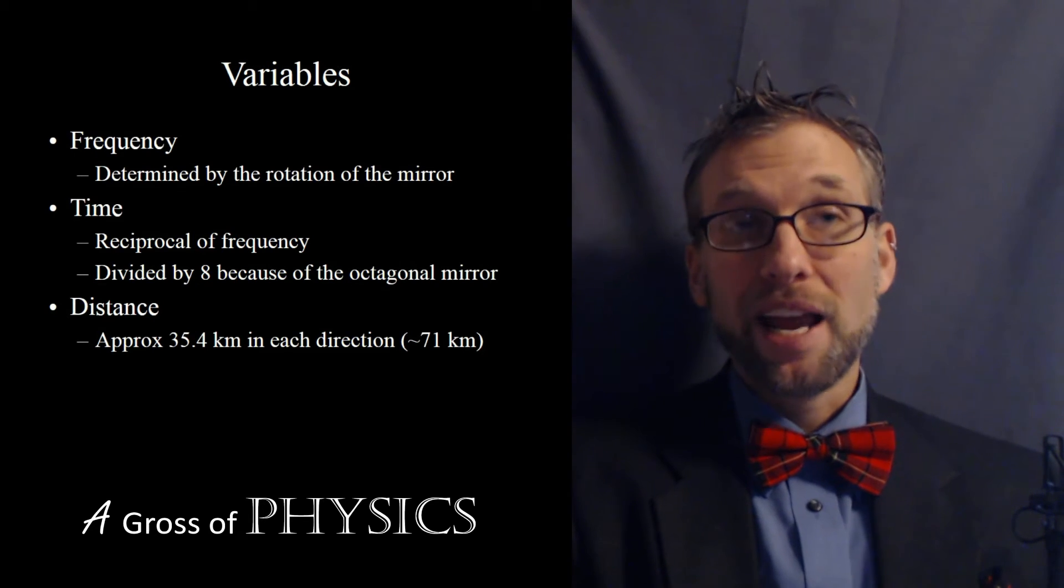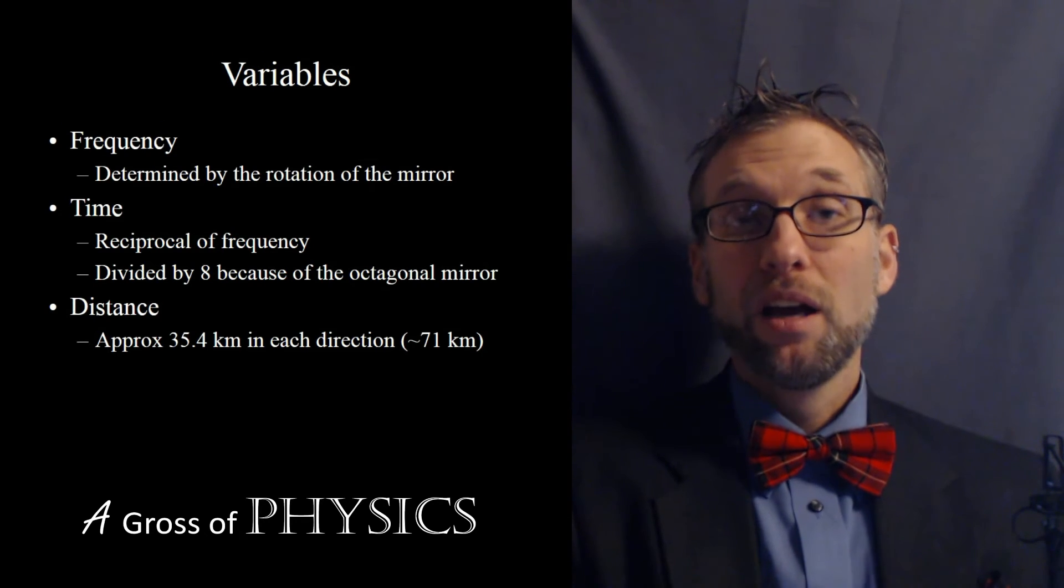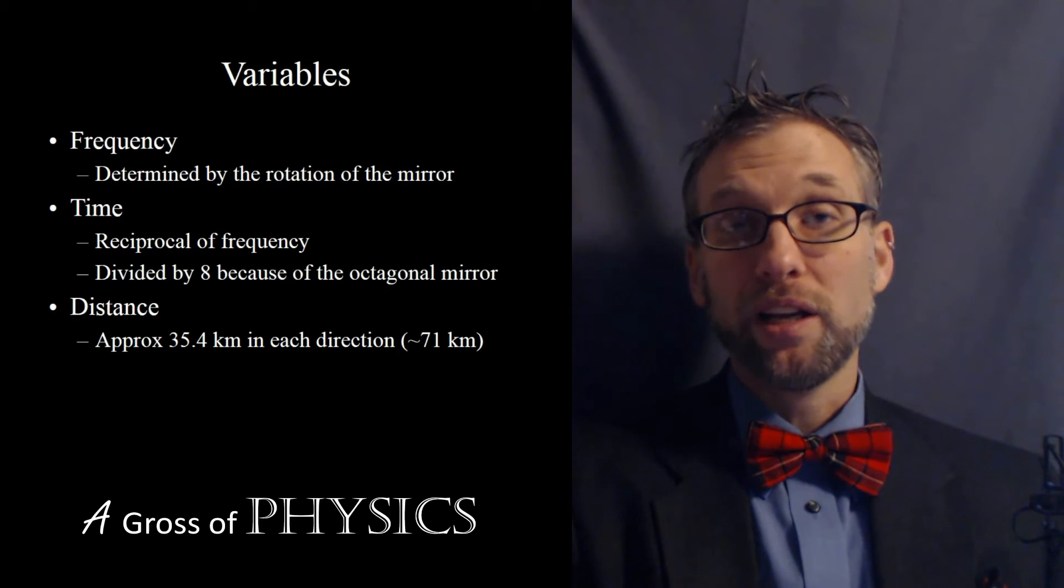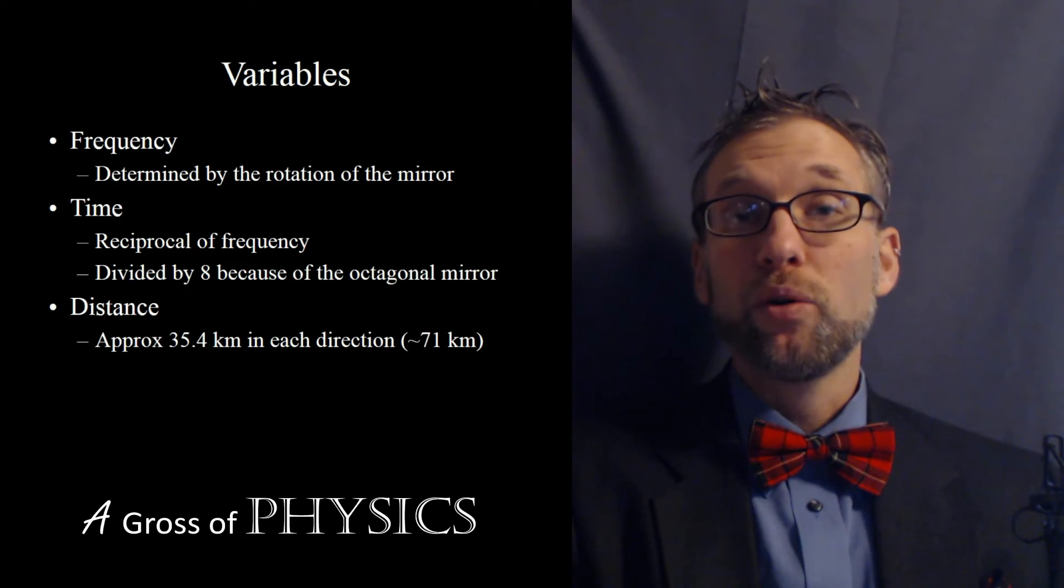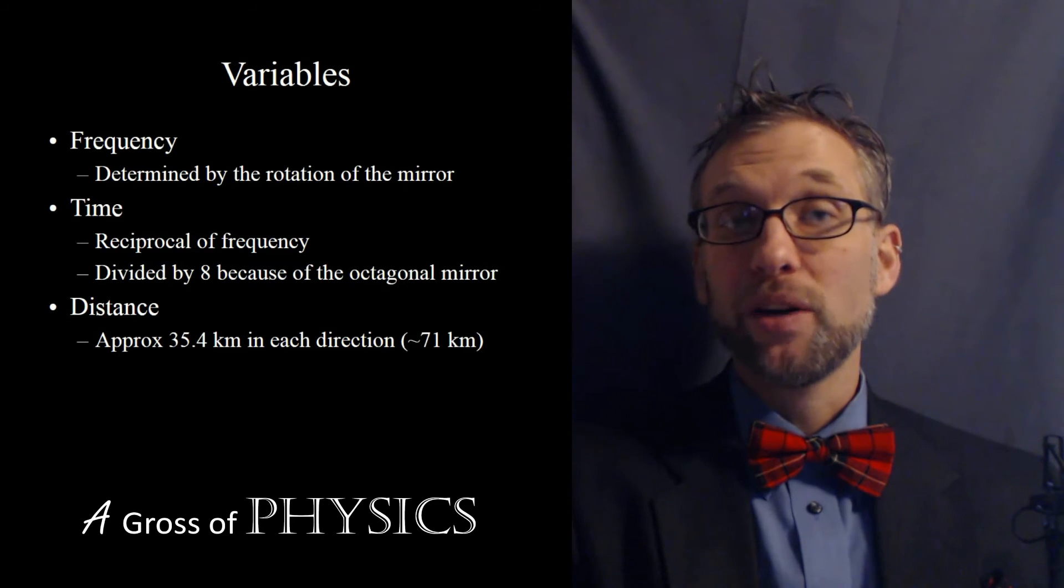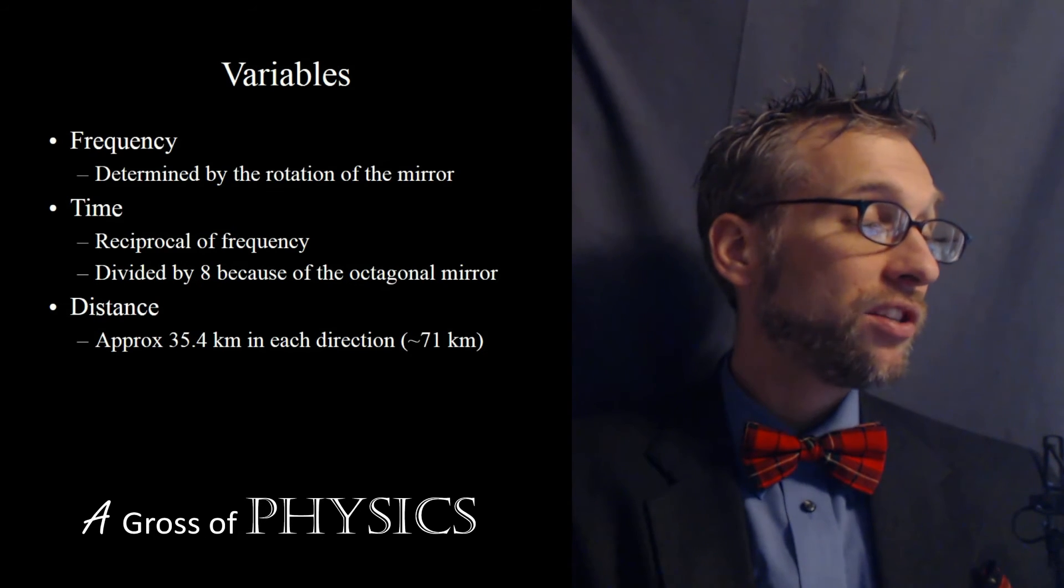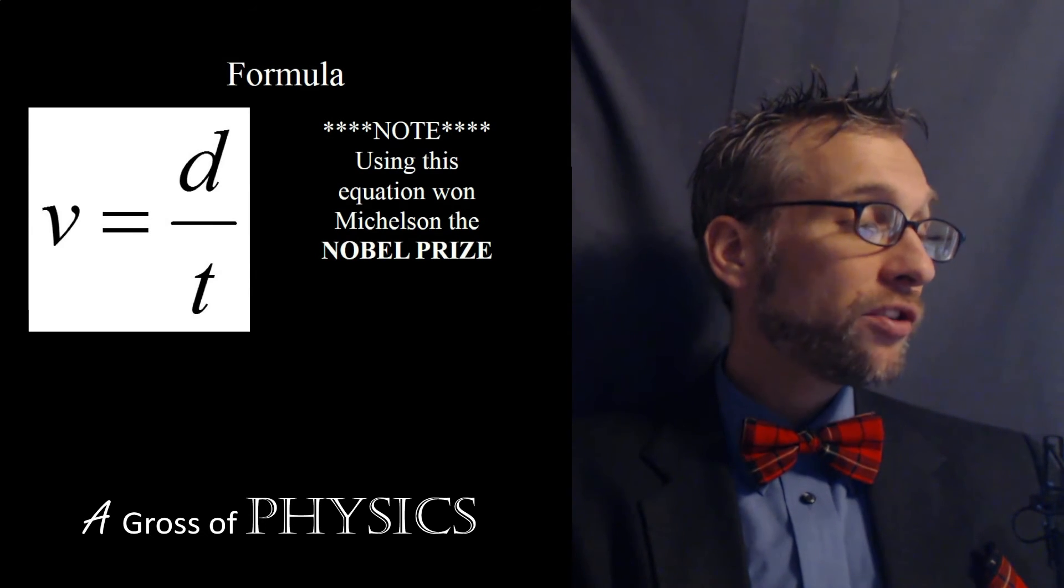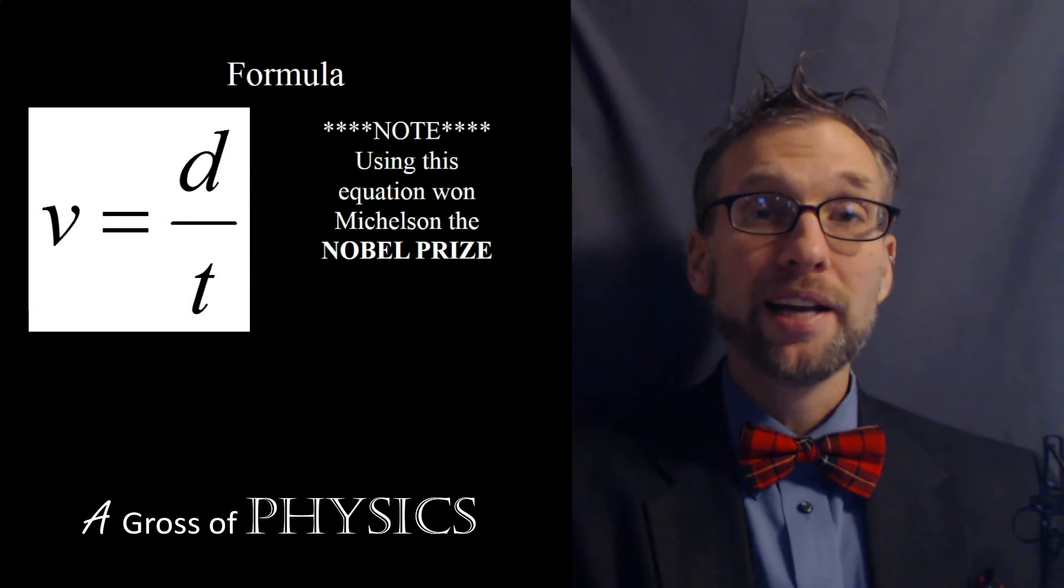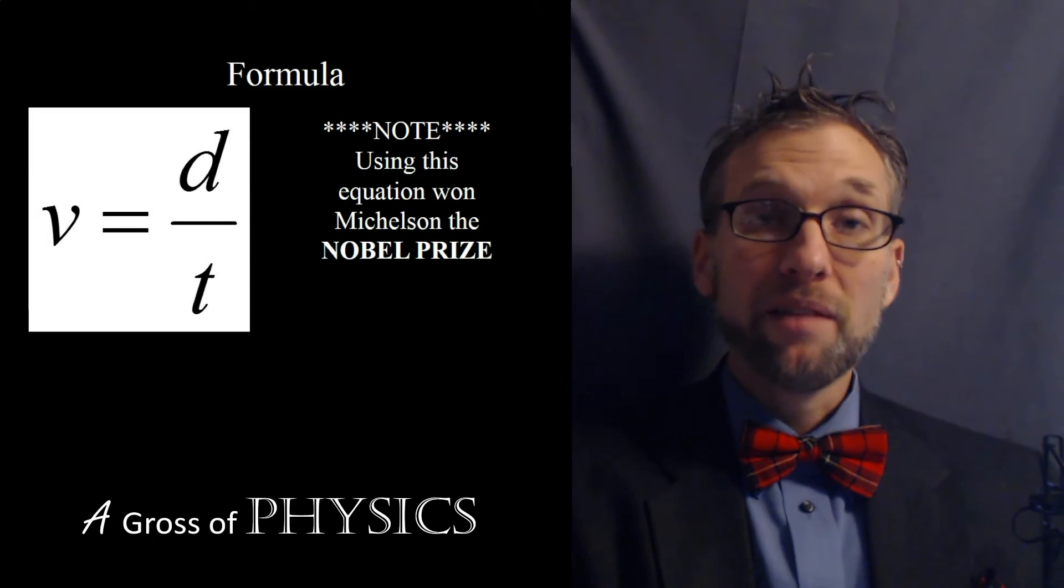So ultimately he painstakingly figured out what frequency the mirror would have to rotate in order to get the light source to be exact. And it would have to have a steady stream of light going into his eye. If he shone the light and the mirror was spinning too quickly, it would miss his eye. If too slowly, it would also miss his eye. So it was only one frequency at which it would hit the mirror. The mirror would rotate one eighth of a spin and it would enter his eye in a continuous stream. Once he was able to do that, he was able to just use velocity equals distance over time in order to determine the speed of light. Now when he did this, he measured the speed of light to be approximately 2.996 times 10 to the 8 meters per second.